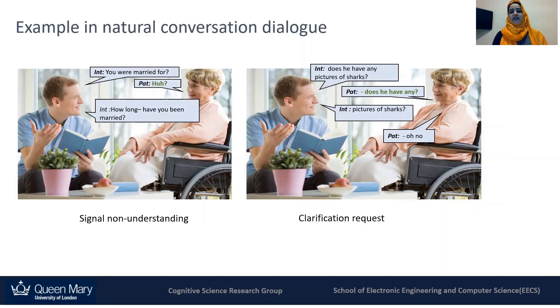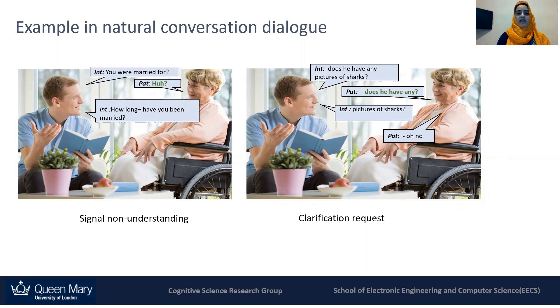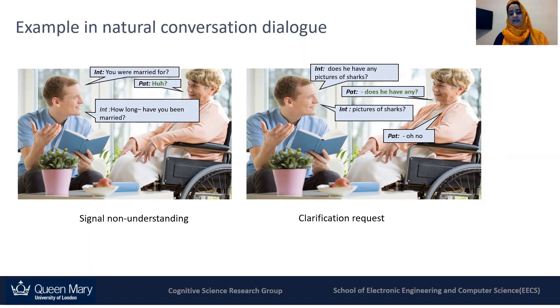Alzheimer's is the most prevalent form of dementia and apart from memory suffering, patients also have language problems and changes in their behavior. One can observe some kind of signal — non-understanding and partial understanding — in their communications.